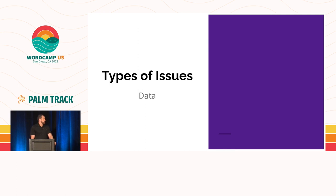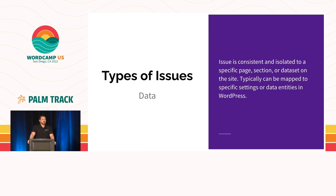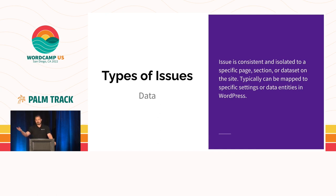Then we have data issues. This is where potentially it could be a misconfiguration of some plugin or a number of potential things. The idea is that it is an issue consistently displayed across a particular entity type in WordPress. So if you've got a plugin that does recipes and this affects all of the recipes, it could be related to the recipe plugin — it could be a misconfiguration of that affecting all of those. Being able to identify that your problem only affects this type of data or this type of thing is very helpful.